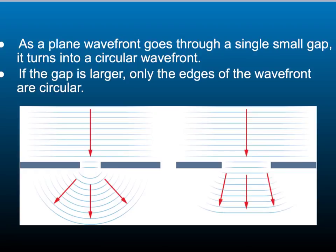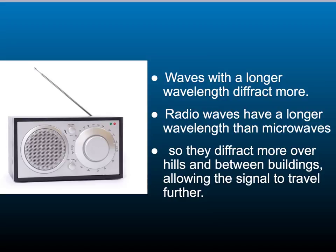Diffraction is not always a bad thing. Radio waves diffract over hills and between buildings, allowing you to pick up signals. Longer wavelength radio signals diffract more than shorter wavelength microwaves. In general, the strongest diffraction occurs when the wavelength of the wave is the same size as the gap it passes through. Waves of longer wavelength diffract more. Radio waves have a longer wavelength than microwaves, so they diffract more over hills and between buildings, allowing the signal to travel further.